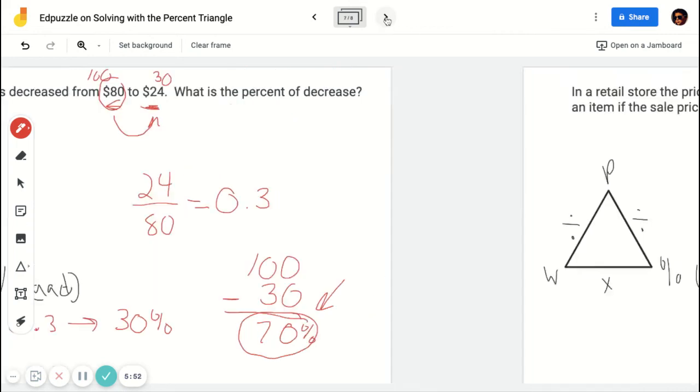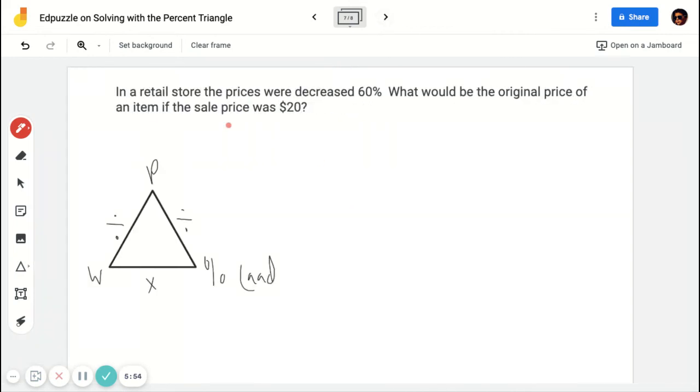Alright. Let's do another. So this one says, in a retail store, the prices were decreased by 60%. What would be the original price of an item if the sale price was $20? So here's the whole, part, and percent as a decimal. So I don't know the whole because it says what was the original price. That's what I'm looking for. I do know that this $20 is the part because that's the sale price.